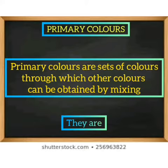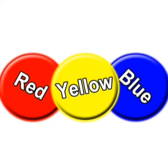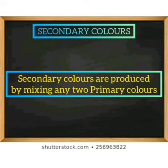Now let us know about the primary colors. Primary colors are sets of colors through which other colors can be obtained by mixing. They are red, yellow and blue.